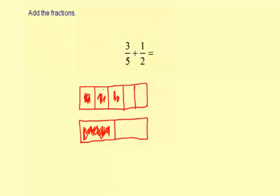Now, the 3 fifths plus 1 half, we can't really combine these as is. They're different sizes, so we don't know how many total we have. So what we have to do is we have to continue to divide these up until we get a common size. And this is like finding a common denominator.